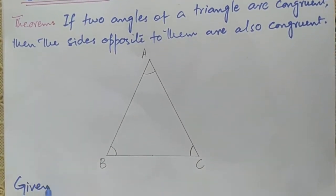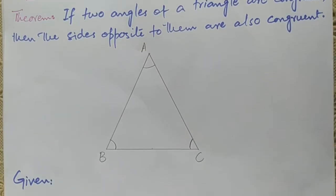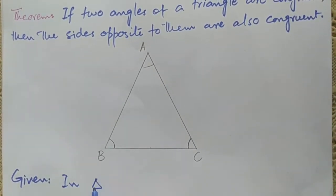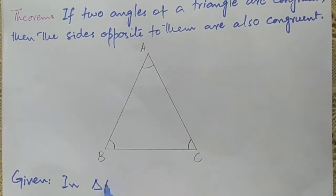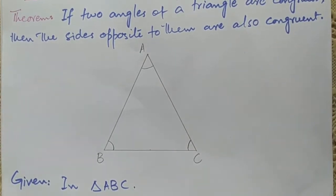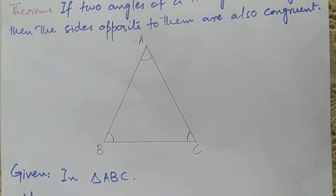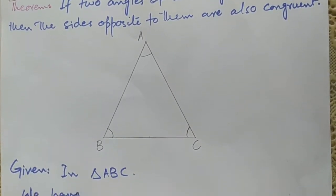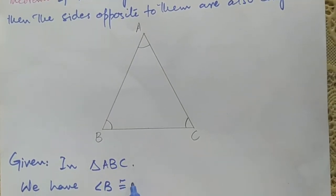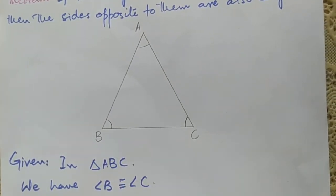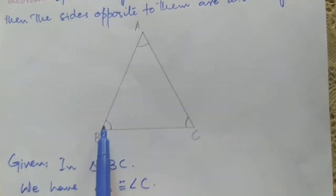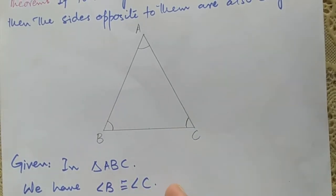What is given? In triangle ABC, angle B is congruent to angle C. This is given.